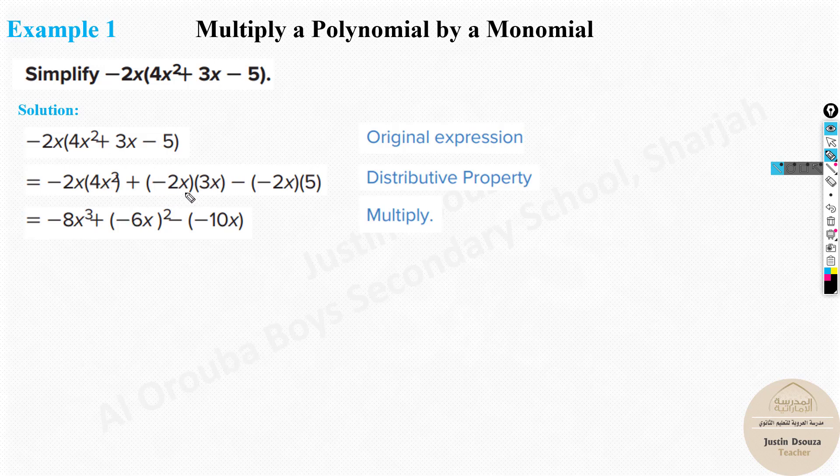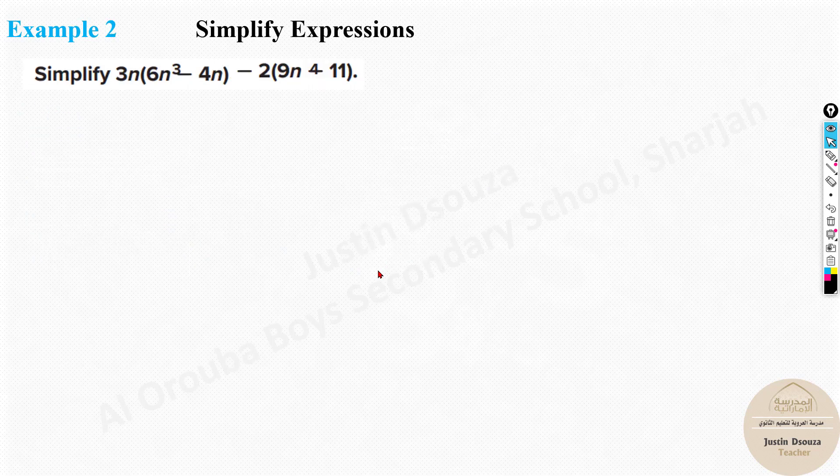Minus 2 times 3 is minus 6. x times x is x square. This is supposed to be inside the bracket. Sorry for the error in this print. Now minus times minus will be plus. They have written minus minus. But now next step they can do it. 5 times 2 is 10x. Now over here, minus 8x cube minus 6x square and plus 10x. That is your answer by distributive property. Very simple.